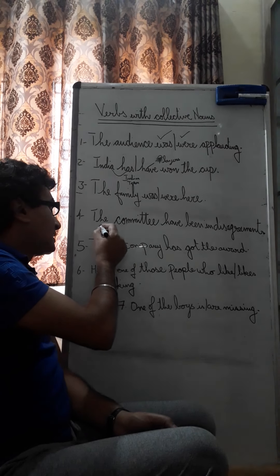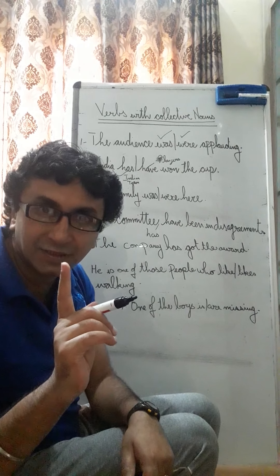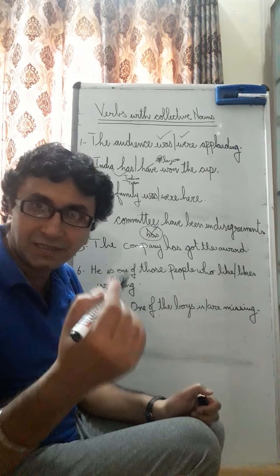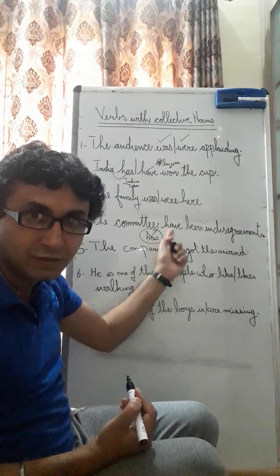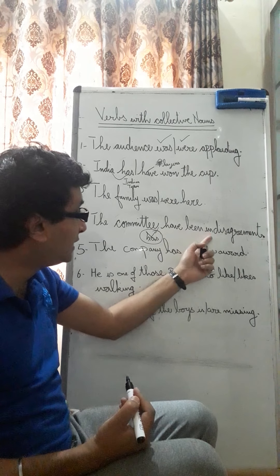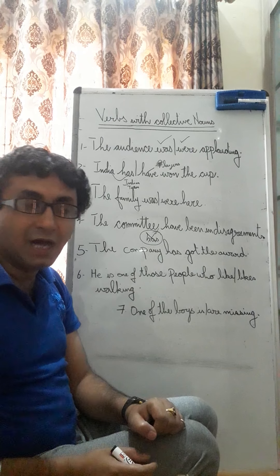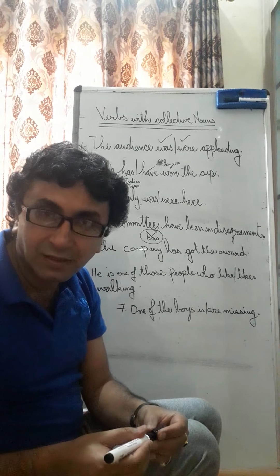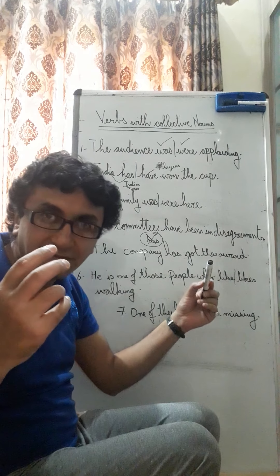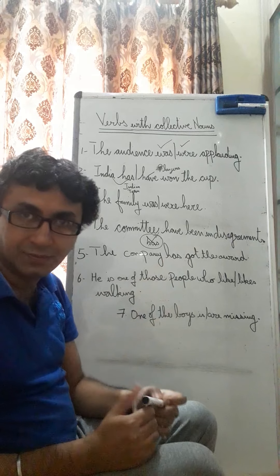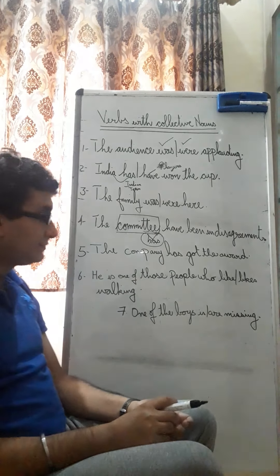In this case, 'the committee has been in disagreement' would be wrong, because as a collective unit they are not disagreeing with each other — the members are fighting. So you say 'the committee have been in disagreement' — plural verb — meaning the members of the committee have been in disagreement. When there is infighting, no unity, a sense of diversity, you use the plural verb. Also, note the spelling of 'committee': double M, double T, double E.